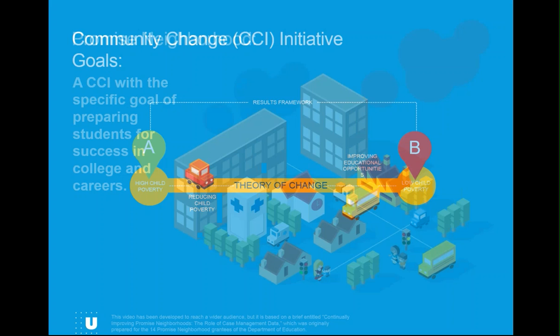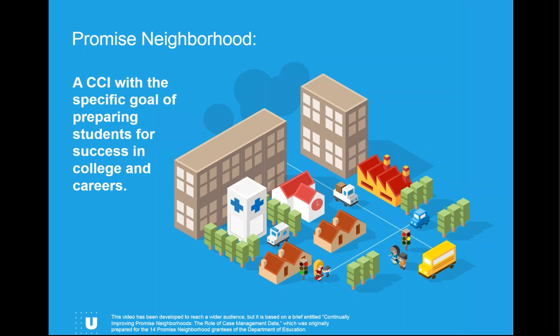For example, a Promise Neighborhood is a CCI with a specific goal of supporting students from cradle to college and career. Promise Neighborhoods develop theories of change about what strategies will ensure children and families are successful at every point along the cradle to career pipeline, and commit to a data-driven planning and improvement process to achieve community results.